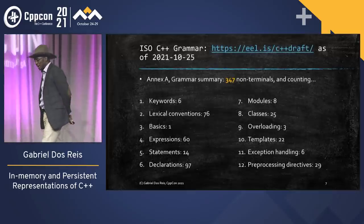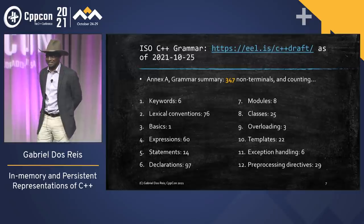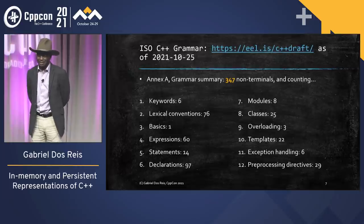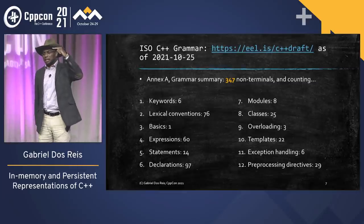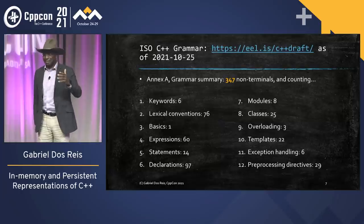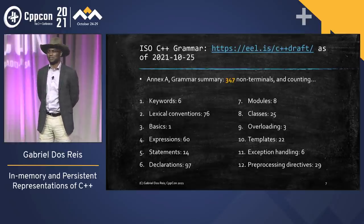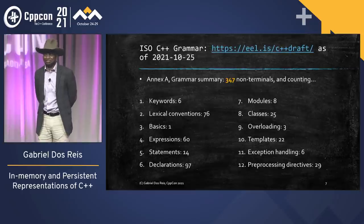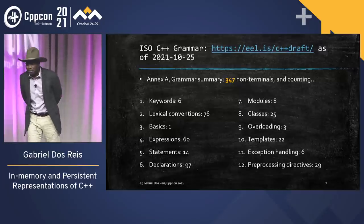Last night I went through Annex A of the standard, the grammar summary, and counted the non-terminal productions — not all the ground productions. I counted about 347. I do not want to dump 347 of these things on you. Nobody will have the patience. So we need to find something minimal and regular enough to take care of all those things. That's why we need to abstract away from concrete syntax and focus on the semantics.